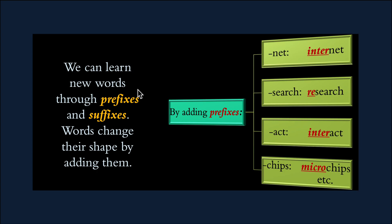We can learn new words through prefixes and suffixes. Words change their shape by adding prefixes. For example, 'net' with the prefix 'inter-' becomes 'internet'. Likewise, 'search' with prefix 're-' becomes 'research'; 'act' with prefix 'inter-' becomes 'interact'; 'chips' with prefix 'micro-' becomes 'microchips', and so on.